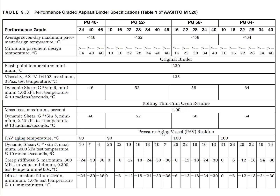After the sample goes through both short-term and long-term aging, three different tests are performed: the dynamic shear rheometer test to measure fatigue potential, the bending beam rheometer test, and the direct tension test. The long-term aging process — the pressure aging vessel test — is performed at 90 to 110 degrees Celsius depending on the grade. The dynamic shear rheometer test for fatigue potential is performed at the intermediate temperature of each grade, and the fatigue parameter should be less than 5,000 kPa.